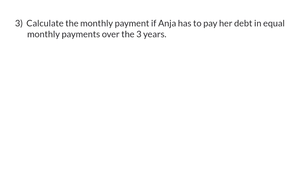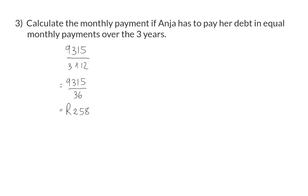Question three: calculate the monthly payment. Anya has to pay her debt in equal monthly payments over three years. We just calculated that she needs to repay 9,315 rand. This now needs to be divided into three years' worth of months — that is three times twelve, giving us 36 equal payments. Each payment will then be 258 rand and 75 cents.